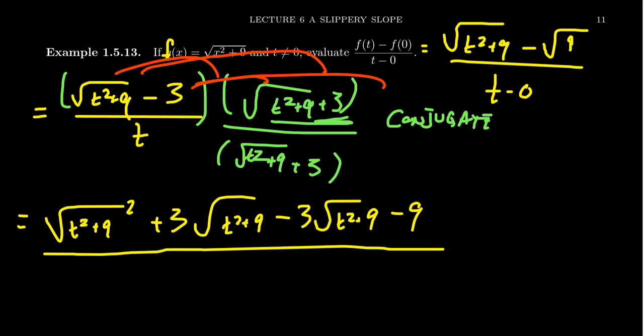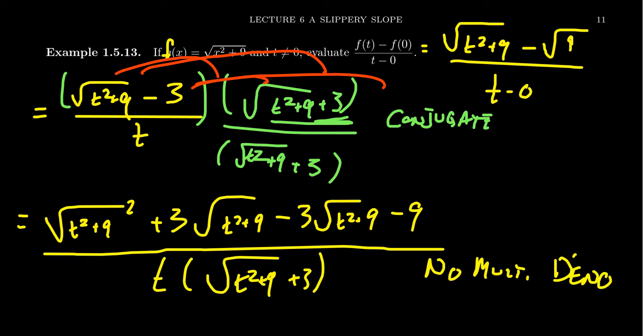That's what you get in the numerator. Now in the denominator, what do you get? You're going to get t times the square root of t squared plus nine plus three. That is, you're not going to multiply out the denominator. No multiply denominator. We've talked about this before. It's actually better for a fraction to keep the denominator factored. You're not doing yourself any favor by multiplying it out, so leave it factored. I'm giving you permission not to do that step, so don't do it, because it's not going to be an effective use of your time.